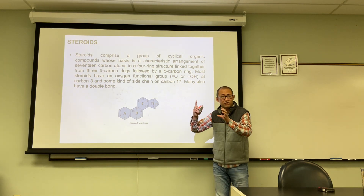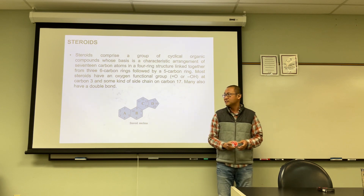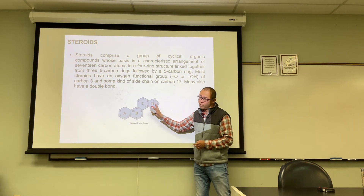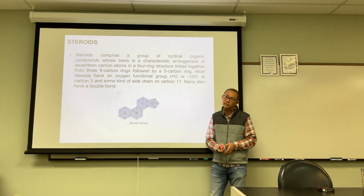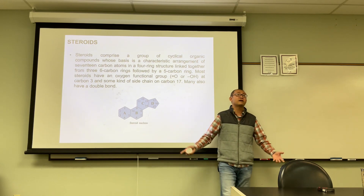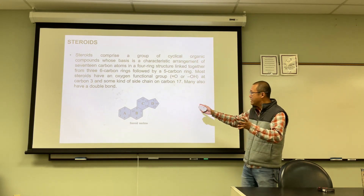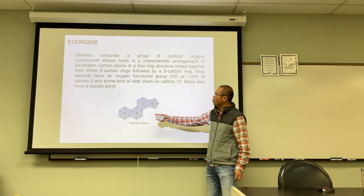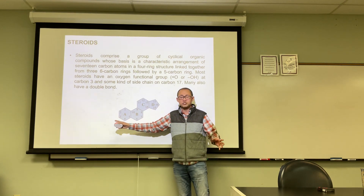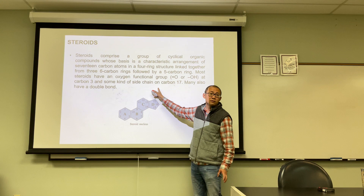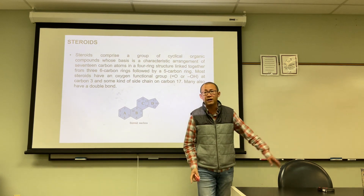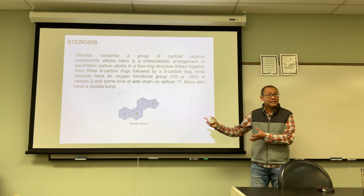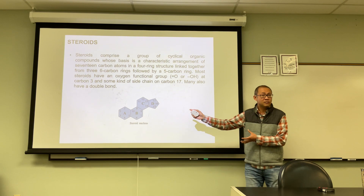Steroids are a large group of organic molecules. All steroids share one thing in common: the steroid core or steroid nucleus. This core has three six-membered rings and one five-membered ring fused together. You don't need to memorize the numbering, only recognize the structure. Normally there is a functional group on carbon 3 (an oxygen) and a chain on carbon 17.